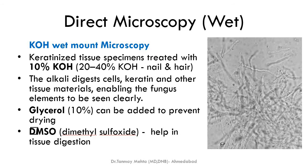In direct microscopy there are three kinds of examination: wet preparations, smear examinations, and histopathological examination. In wet preparation, the most commonly used method is KOH wet mount microscopy. Keratinized tissue specimens — usually nail, hair, and skin — are treated with 10% KOH.